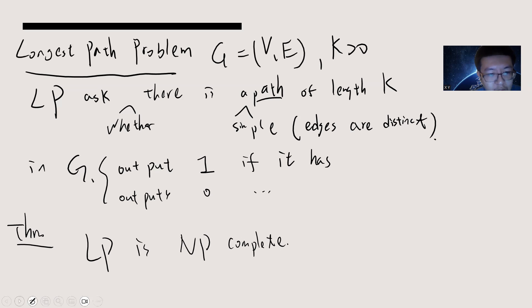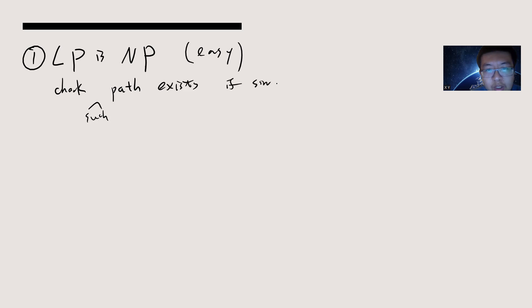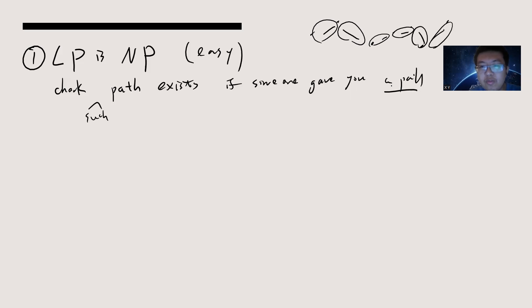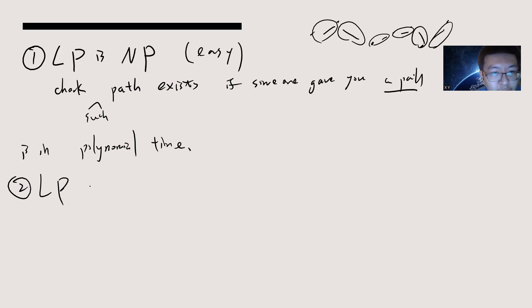In order to follow the standard strategy, you first need to show that LP is in NP. This is easy, because you just need to check that such a path exists. If someone gives you the path, you can just check whether this is a simple path — you can determine whether the edges are unique, check whether this is a valid path, and check whether two vertices are actually connected. This is polynomial time, obviously, because you have a polynomial number of edges and vertices. Our goal now is to show that LP is NP-hard.